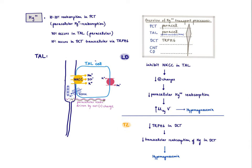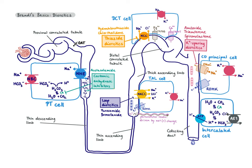Thiazides also cause hypomagnesemia, so unlike calcium, both loop diuretics and thiazides have the same directional effect on magnesium — though by different mechanisms. Thiazides block NCC, and close to the NCC is the TRPM6 magnesium channel in the distal convoluted tubule. The mechanism is not completely clear, but when you block NCC, TRPM6 is also downregulated or not working. Therefore, thiazides also cause hypomagnesemia, just via a different mechanism from loop diuretics.